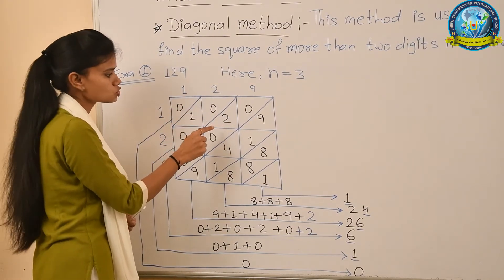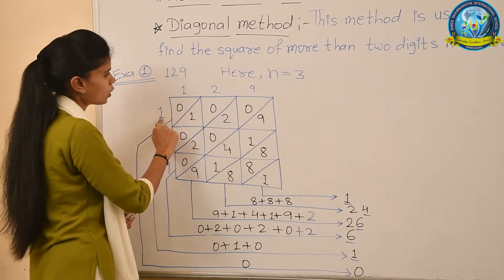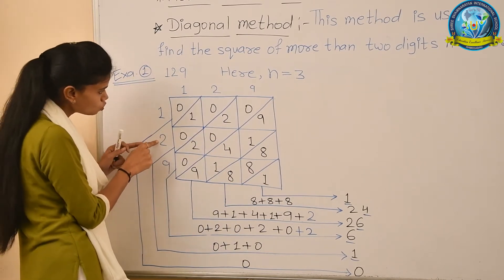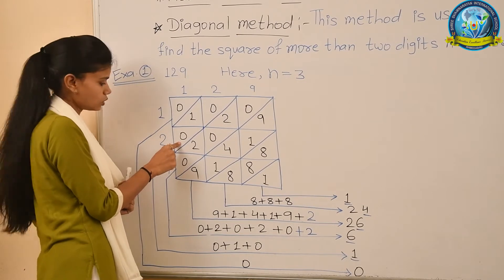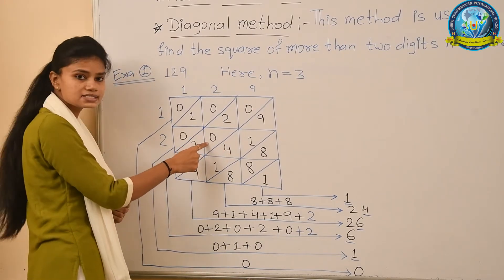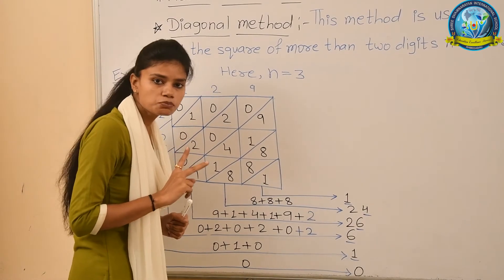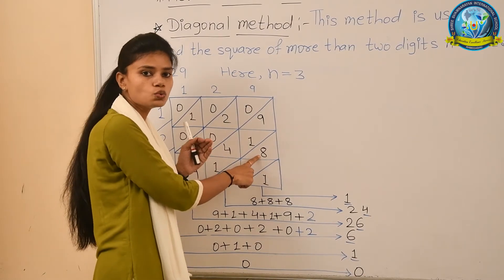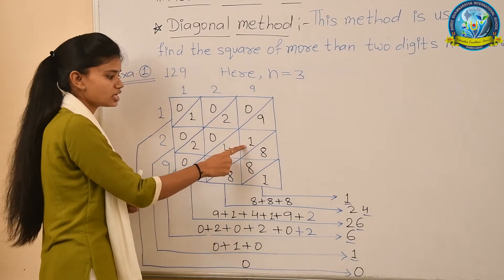When we multiply 1 with 2, we get 2 — single digit — so we write 2 in the lower part and 0 in the upper part. Then 1×9=9, lower part gets 9, upper part 0. Next, 2×1=2, lower part 2, upper part 0. Then 2×2=4, lower part 4, upper part 0. For 2×9=18, since it is two digits, we write 8 in the lower part (ones place) and 1 in the upper part (tens place).